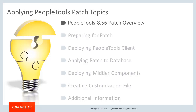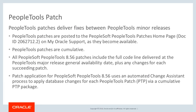We will begin with an overview of the patch process and the use cases for applying the PeopleTools patch. PeopleTools patches deliver fixes between PeopleTools minor releases. The patches are posted to the PeopleSoft PeopleTools patches home page on My Oracle Support as they become available. The doc ID is 2062712.2. PeopleTools patches are cumulative — they include all fixes for all previous patches for a specified release. For example, patch 03 contains all the fixes contained in 02 as well as those in 01.